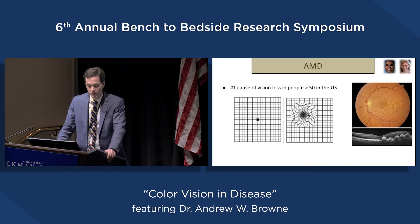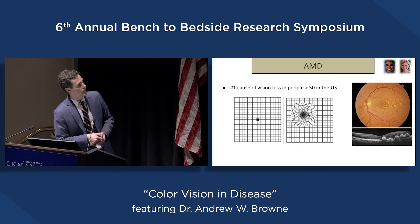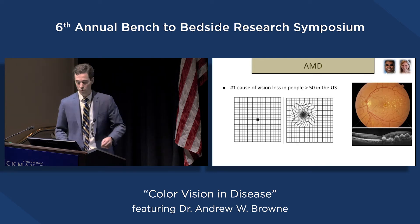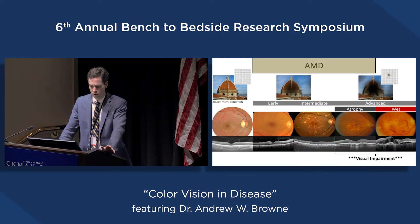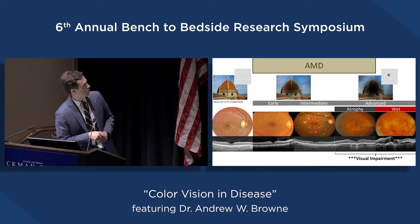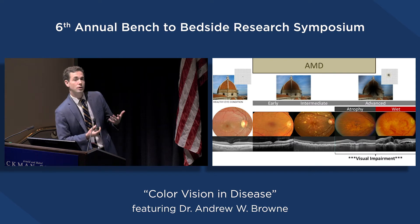Macular degeneration is the number one cause of vision loss in people over 50 in the US. We've seen pictures of drusen throughout the macula as shown on OCT, and changes can appear on the Amsler grid with decreased contrast sensitivity. With different stages: in a healthy eye there's no drusen; early macular degeneration shows a few punctate drusen; intermediate shows many more drusen distributed throughout the macula. Someone may start to have decreased contrast sensitivity in early and intermediate stages while visual acuity may not be affected at all.